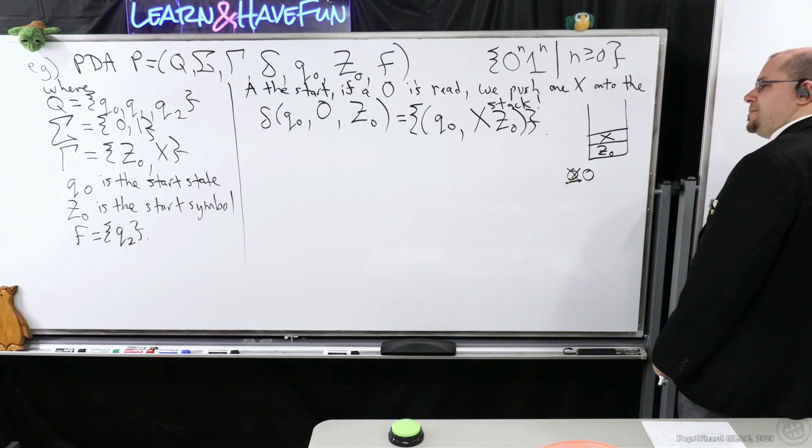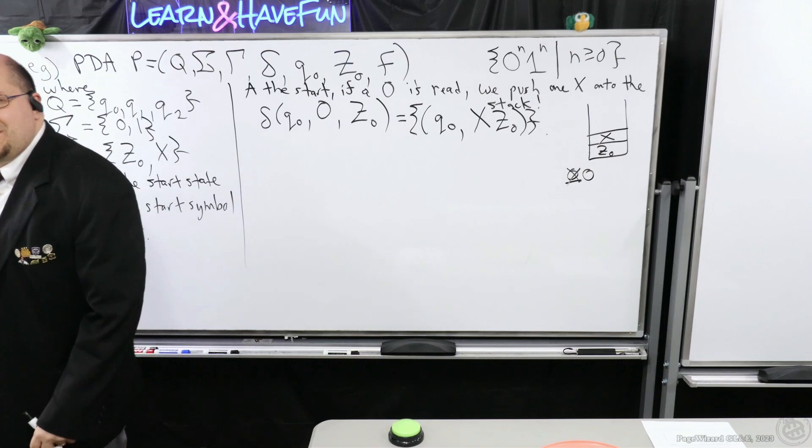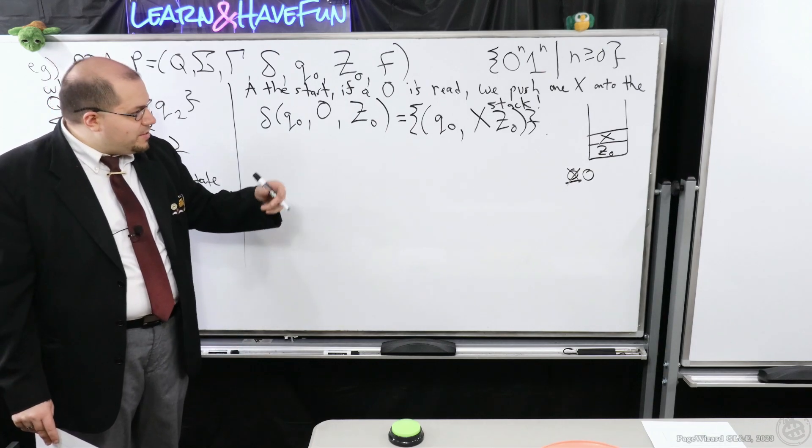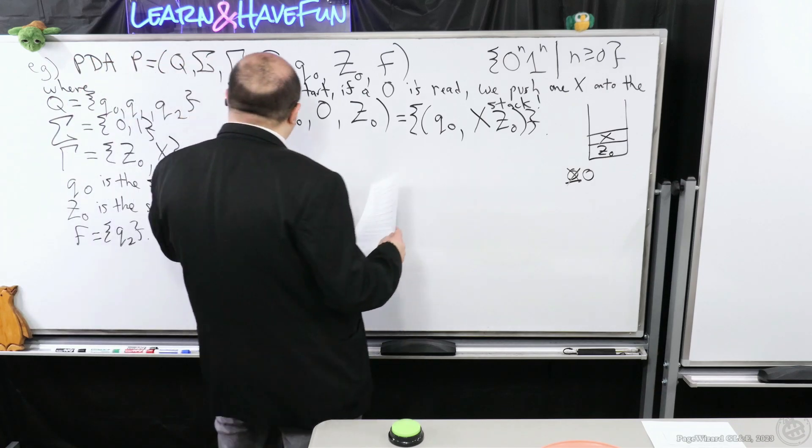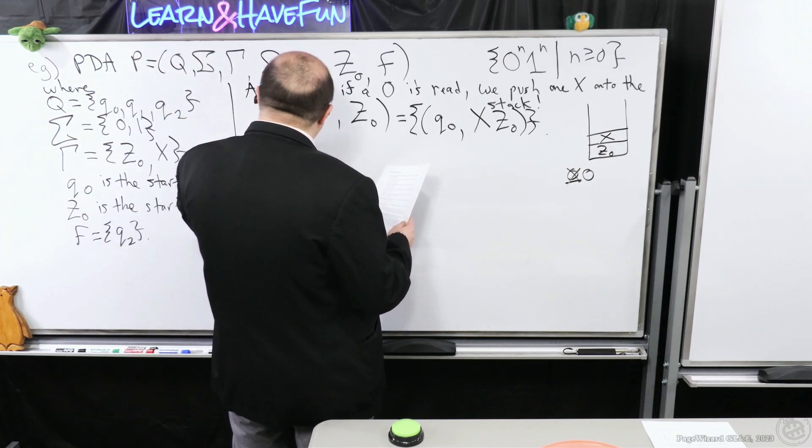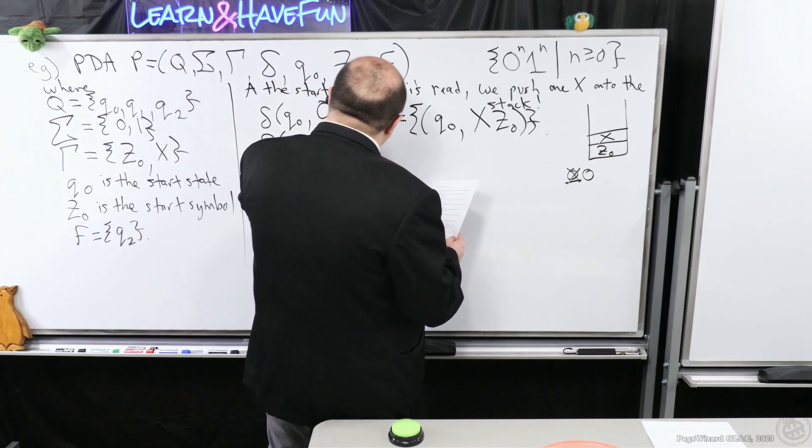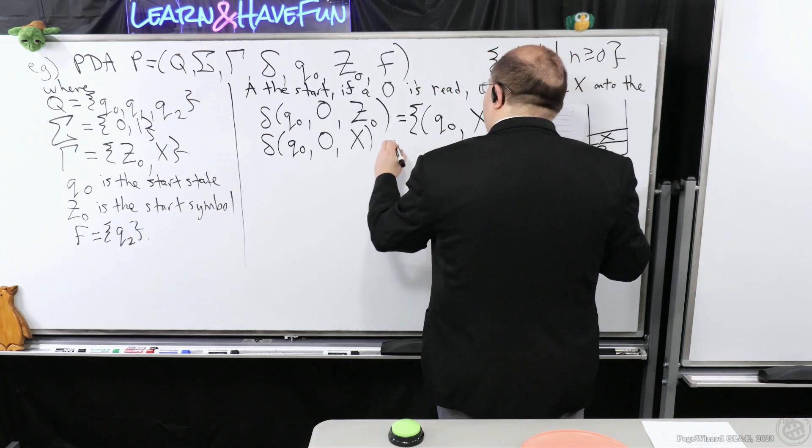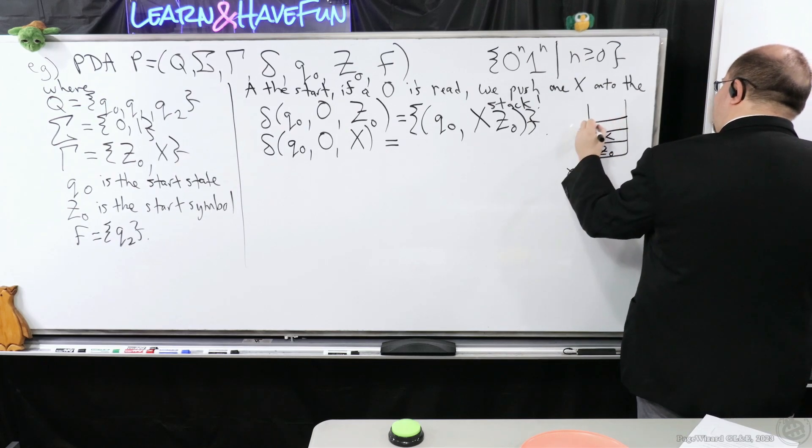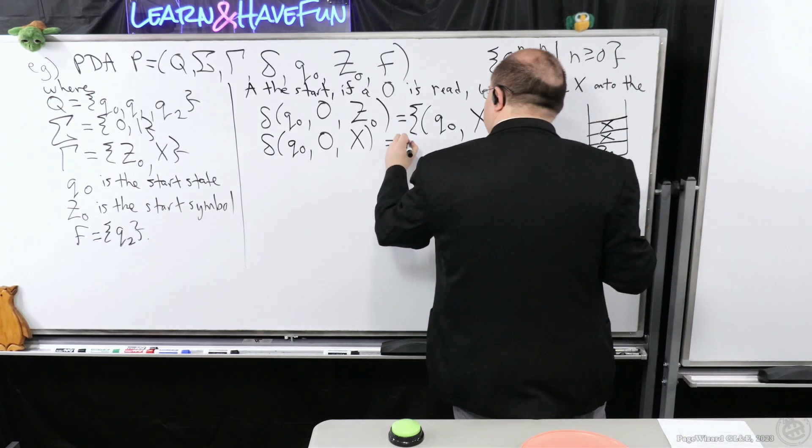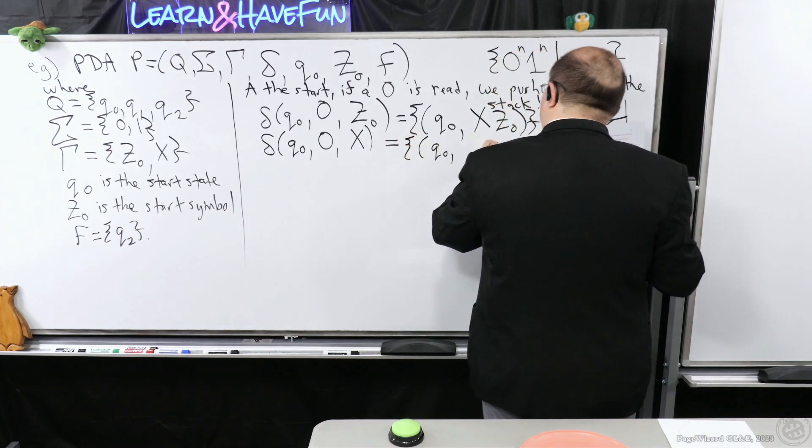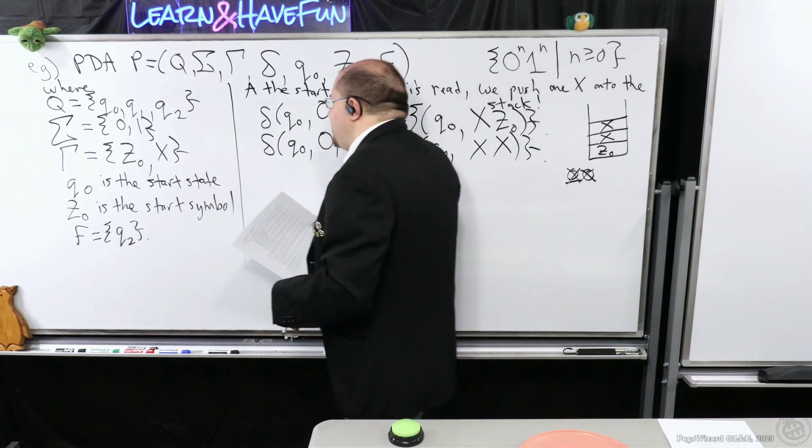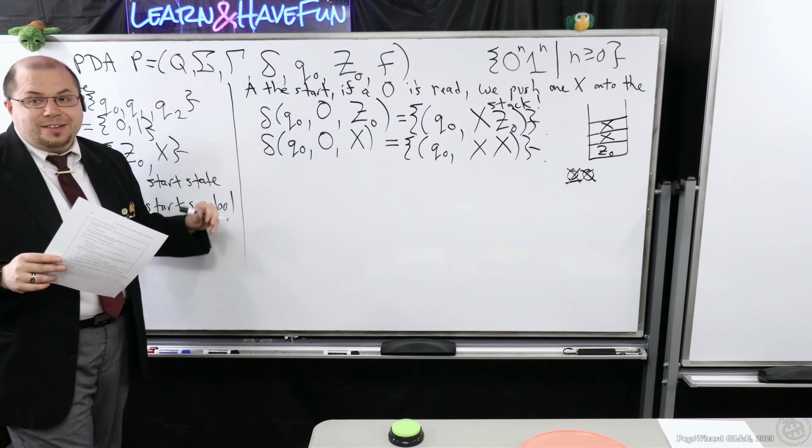What if I have another zero? What would the top of the stack look like then? What's the top of the stack going to be in that case? It's not going to be z0 anymore. So we need to account for the case when the top of the stack is an x. So when we have that happen, we gobble up the zero, push an x, but we stay in q0. So the top of the stack is an x, I'm going to push an x. So notice that this will actually account for the first phase.